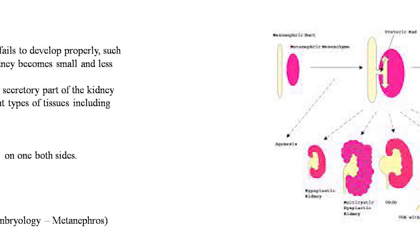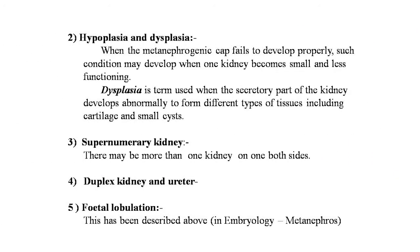The second congenital anomaly is hypoplasia and dysplasia. When the metanephrogenic capsule fails to develop properly, one kidney becomes small and less functioning. Dysplasia is the term used when the secretory parts of the kidney develop abnormally to form different types of tissues, including cartilage and small cysts.